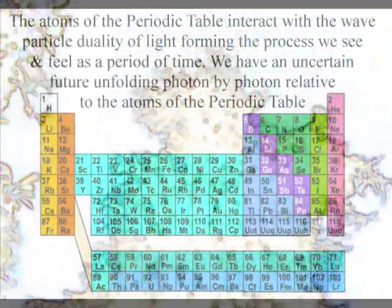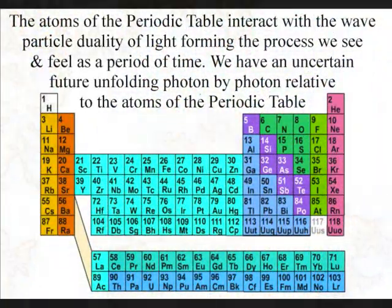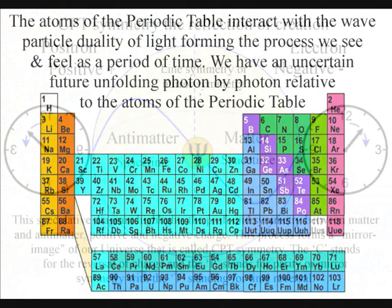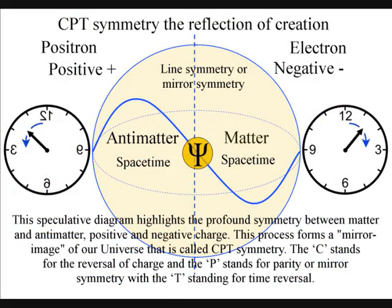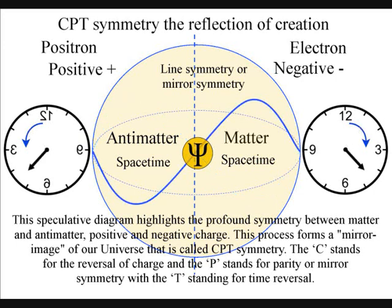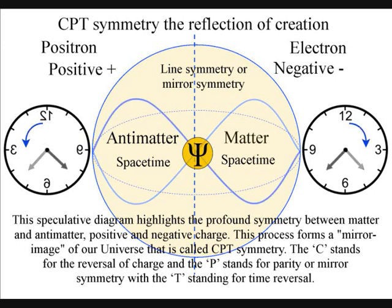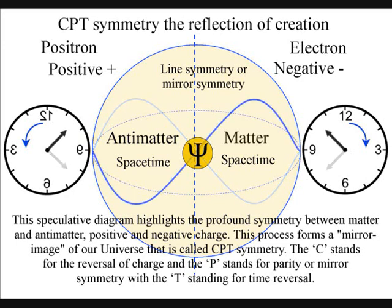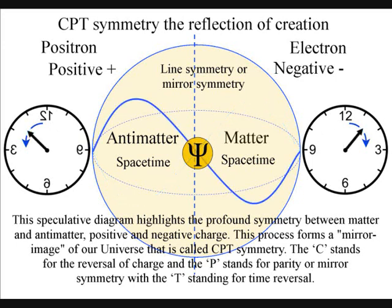Light is continuously interacting with the atoms of the periodic table, with the continuous annihilation of antimatter. This process forms a mirror-image of our universe that is called CPT symmetry, with the C standing for the reversal of charge, and the P standing for parity or mirror-symmetry. The T stands for time reversal.